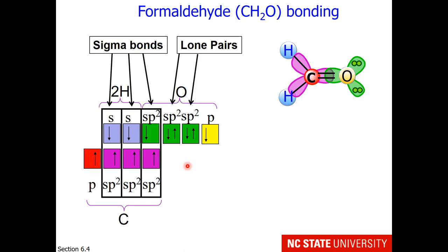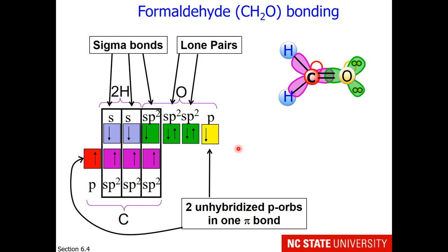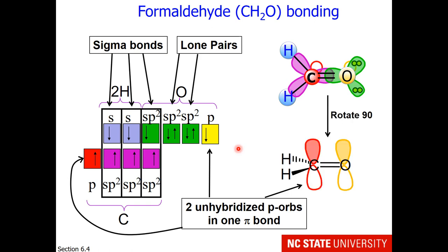What about the pi bond? Remember that we had one unhybridized orbital on carbon and one unhybridized orbital on oxygen. The carbon, hydrogen, hydrogen, and oxygen are all in the plane. The unhybridized p orbitals are coming out at you and going back into the plane of the screen. So these two unhybridized p orbitals make one pi bond. If I rotate that 90 degrees, you can see these are two unhybridized p orbitals meeting sideways. Their overlap forms a pi bond where the electrons can be either above or below the plane of the nuclei, but there is a node between them.